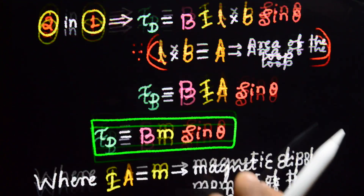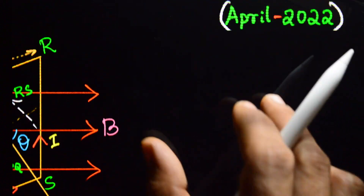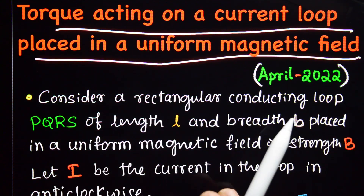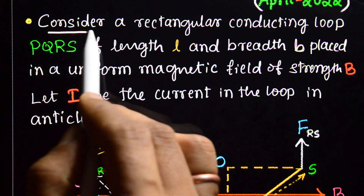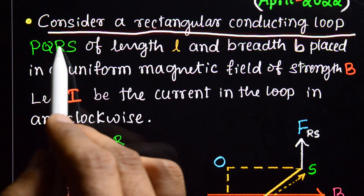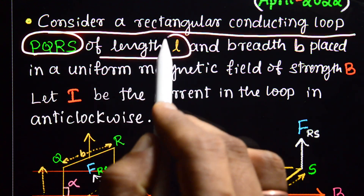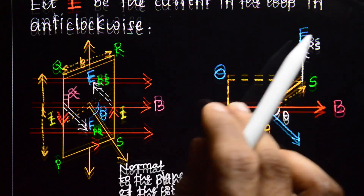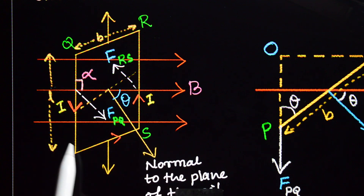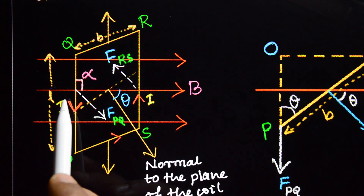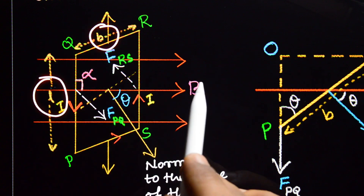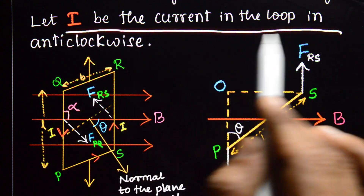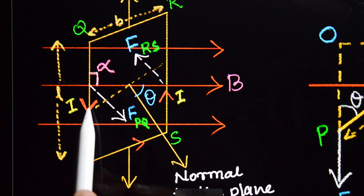Now let's see how to write this in an examination. Consider a rectangular conducting loop PQRS of length l and breadth b placed in a uniform magnetic field B. Let i be the current in the loop flowing in the anticlockwise direction. Draw a neat diagram of the loop in the magnetic field.